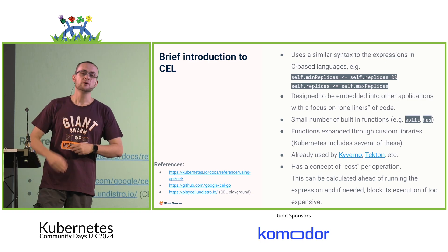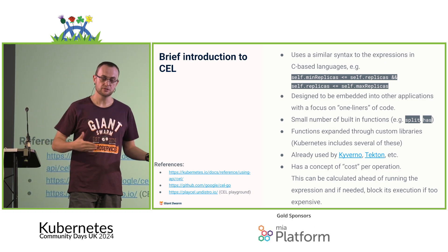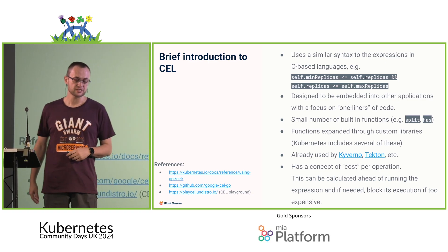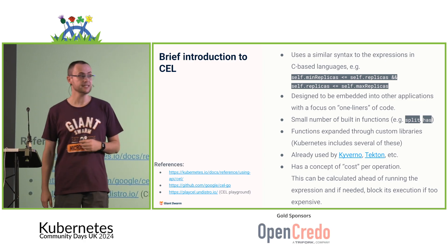It consists of two main resources. You've got a new CRD called ValidatingAdmissionPolicy, which describes the actual logic you want to apply. And then you've got a ValidatingAdmissionPolicyBinding, which tells your cluster what resources to apply that policy to. Let me do a brief introduction to CEL just so you have some understanding for the examples I'm going to show.